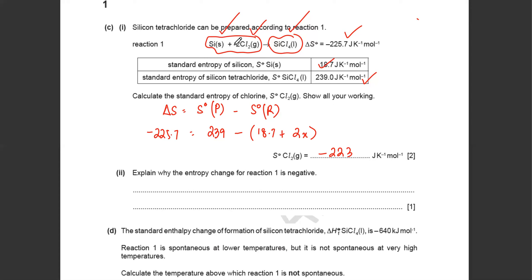This comes out to be negative 223. Remember: entropies of the products and entropies of the reactants are given; the entropy change is the difference between the two. Why is the entropy change negative? Because gas moles decrease — you have more gas on the reactant side, but in the products there is no gas, so the disorder is decreasing.